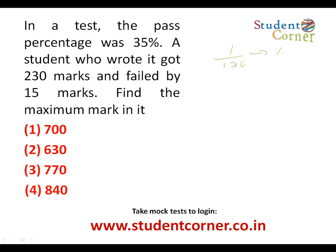Here is the first question: in a test the pass percentage was 35%. A student got 230 marks and still failed by 15 marks. That means to pass he needed 230 plus 15, which is 245. So in the form of percentages, 35% corresponds to 245, and we need to find the maximum marks.